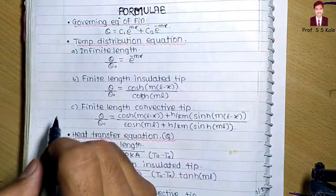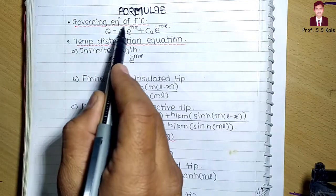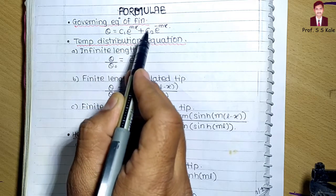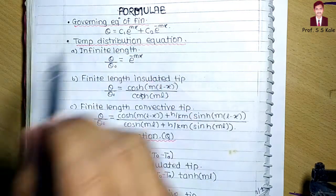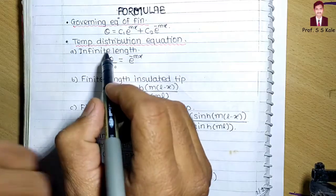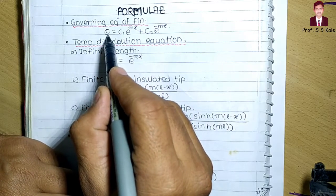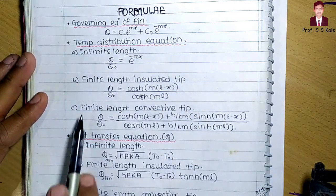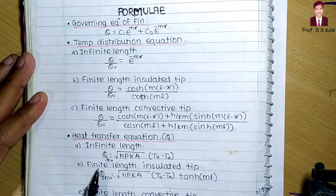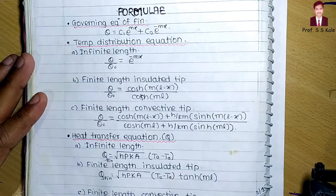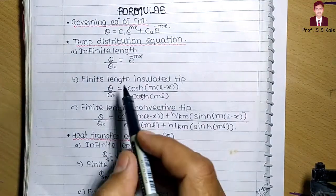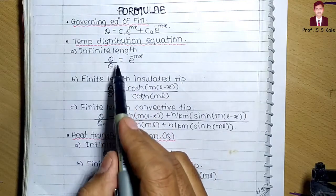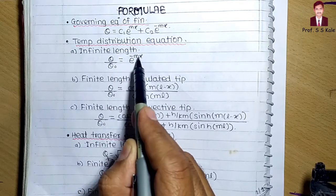The governing equation of a fin is: theta equals C1 times e raised to mx plus C2 times e raised to minus mx, where theta is T minus T_a, C1 and C2 are constants, and m is the square root of hP over kA. For comparison, the temperature distribution for infinite length is theta/theta_0 equals e raised to minus mx.